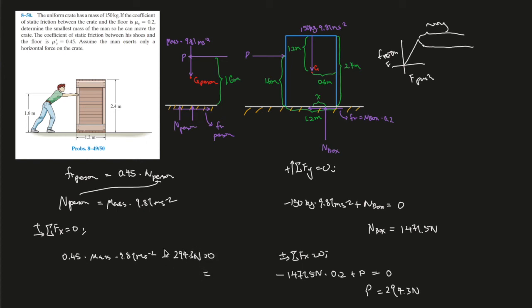Moving 294.3 to the right side and dividing by 0.45 and then by 9.81, the mass works out to 66.6 repeating kilograms, or 66.7 kilograms.